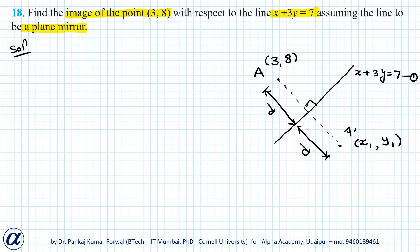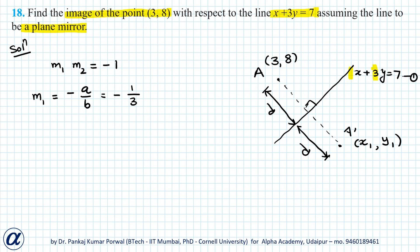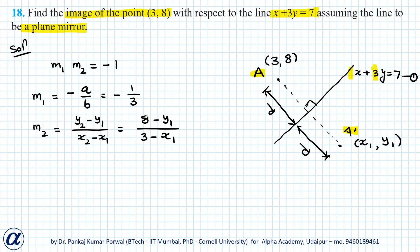For the first condition — perpendicularity — I can write m₁ × m₂ equals minus 1, where m₁ is the slope of the plane mirror and m₂ is the slope of the line connecting the point with its image. For a general line ax plus by plus c equals 0, m₁ equals minus a over b. So here, m₁ equals minus 1 over 3. m₂ is the slope of line connecting A and A', which equals (8 minus y₁) divided by (3 minus x₁).